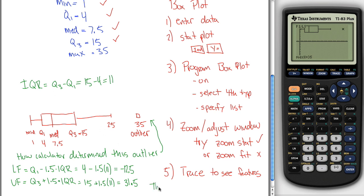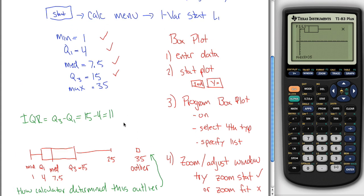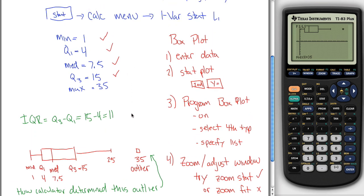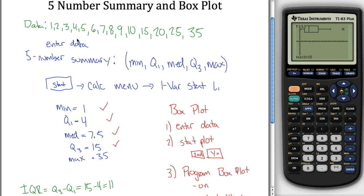So these are bounds for outliers. So what your calculator does is it says, any data point between negative 12.5 and 31.5 is fine. That one works. But anything that's not in between these two values, I'm going to call an outlier. So it looked at my data set and it decided 35 is not between these two values, so it's an outlier. But everything else is between those two values.